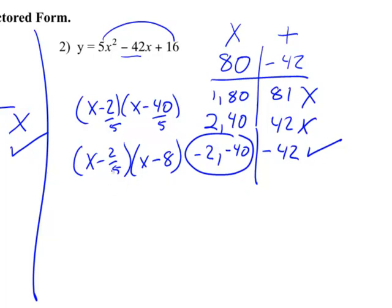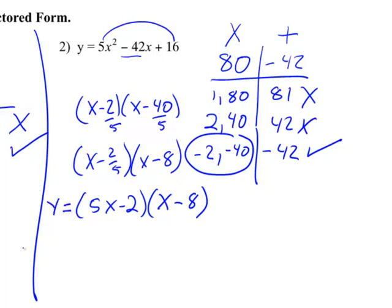I don't like fractions, but we can fix this. Whenever I get an x minus a fraction that can't be reduced, I take the denominator and move it in front of the x. So this becomes (5x minus 2)(x minus 8). Put a y equals in front, and there we are. This is a slightly different factored form than we've seen before because we have a 5 in front of the x, but it works exactly the same way. If I were to FOIL this out, it would give me back my original standard equation.